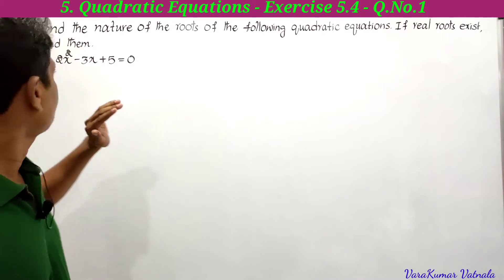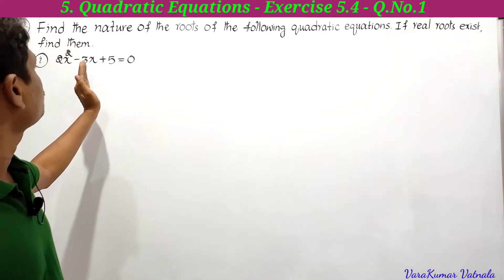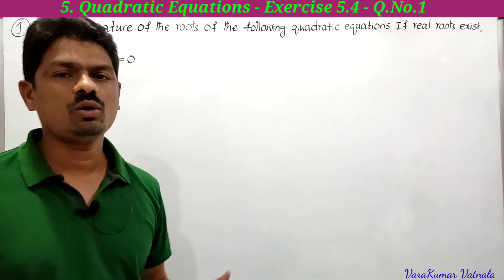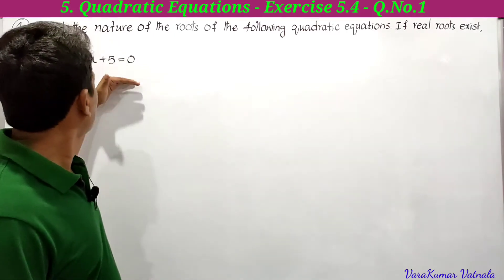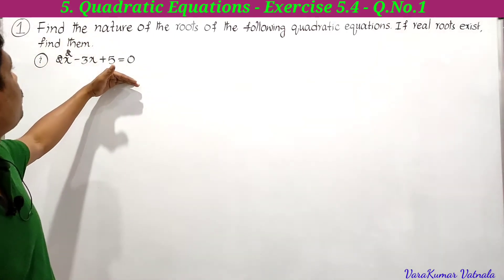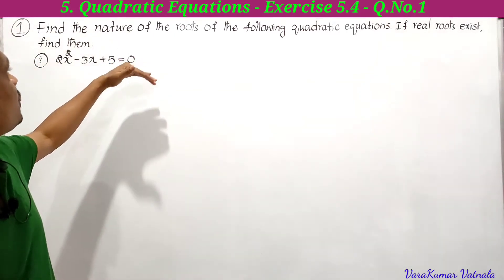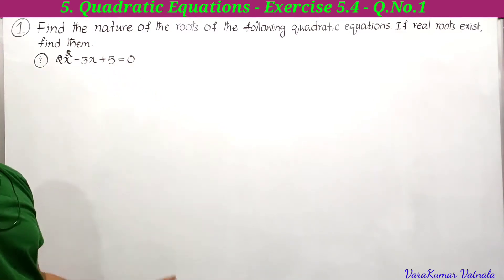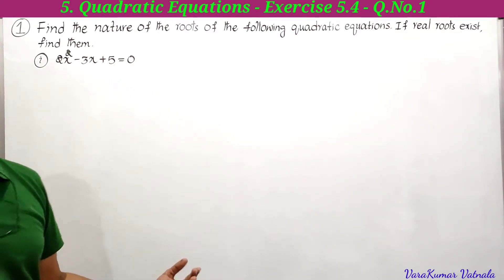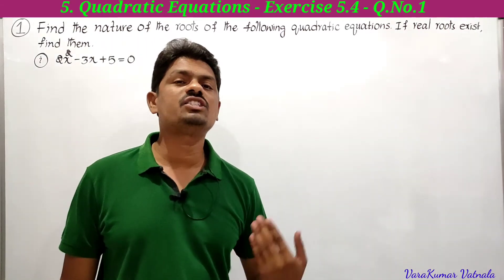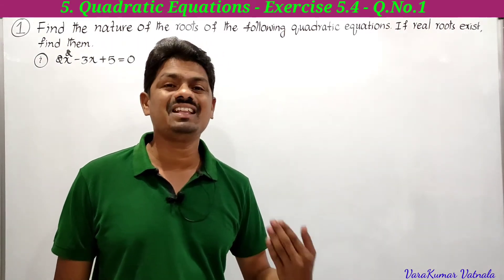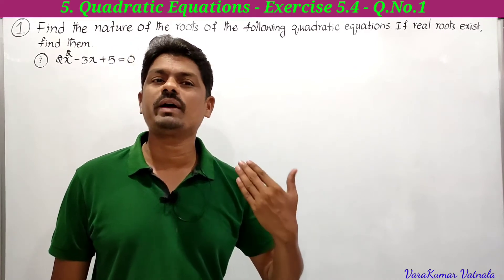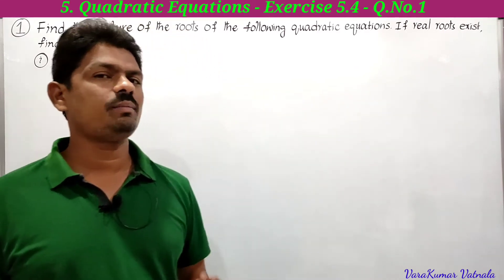The first part is: 2x² - 3x + 5 = 0. We have to find the nature of the roots, and if real roots exist, find them. We use the discriminant b²-4ac to determine the nature of the roots.